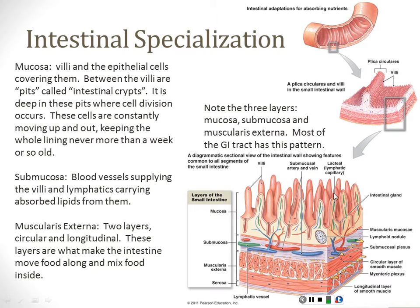The mucosa of the intestines has villi that stick up, and in between them are pits called intestinal crypts — a deep hole. It's down here in the crypts where cell division is occurring. Just like in the stomach where cell division occurs down low and the cells work their way up to the top and then are shed and die, we have that same pattern in the intestine.